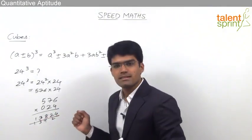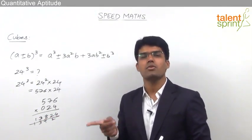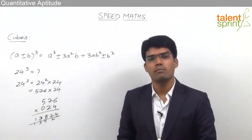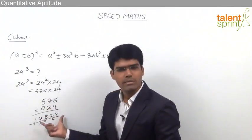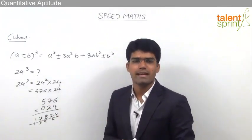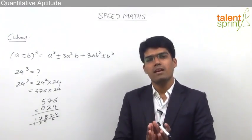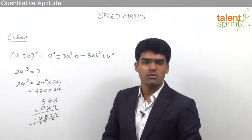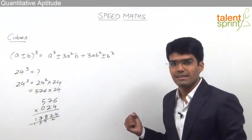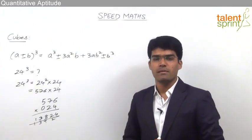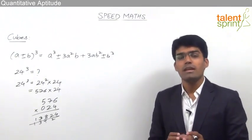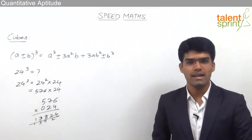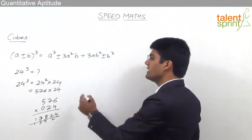So to find x cube, take it as x squared into x. X squared can be calculated quickly in 3 to 4 seconds without writing, and then x squared into x can be done on paper to comfortably get the answer. This is one very easy way of finding cubes — work it out on paper as quickly as possible. Now the other method is an important technique from Vedic mathematics, though it is not so easy to apply for all cubes.